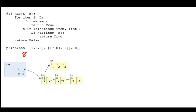If you were to put this in Python Tutor, it would look something like this: `l` refers to a list with two entries — one is a list with the numbers one, two, three, and the other is a list that contains both a list and nine. Let's trace through what the function does.